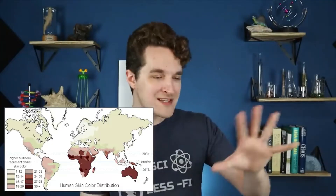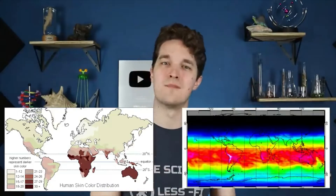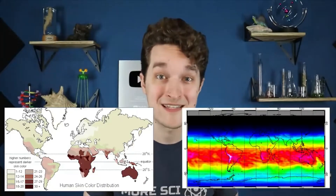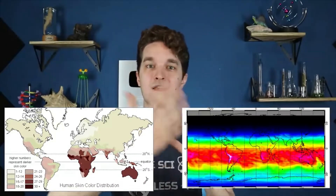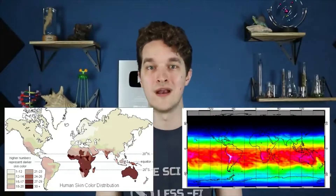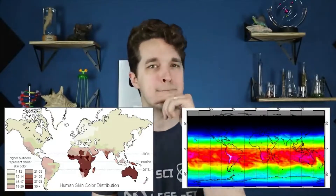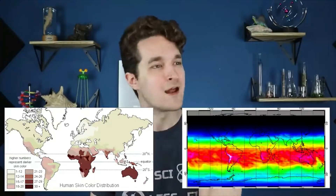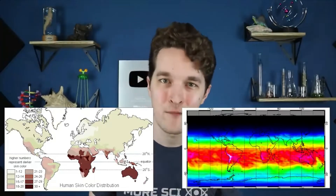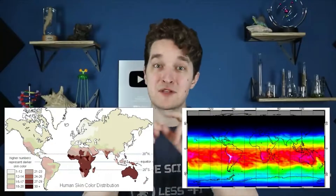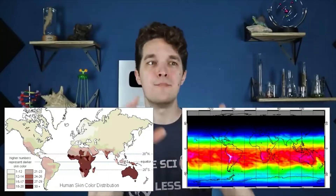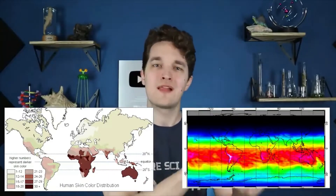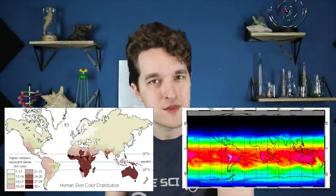Let's take a look at this other map of ultraviolet light saturation — how much UV light is hitting the surface of the globe at any given moment. Now doesn't that look familiar? If we overlap these maps, they're almost the exact same map. Maybe UV light has something to do with this.